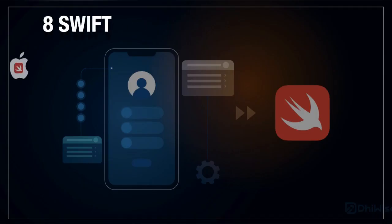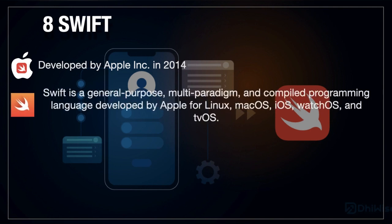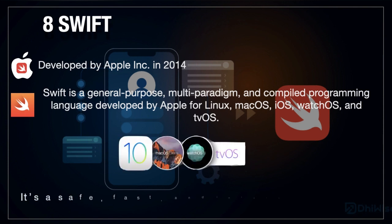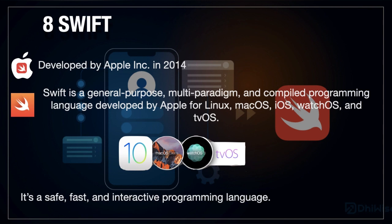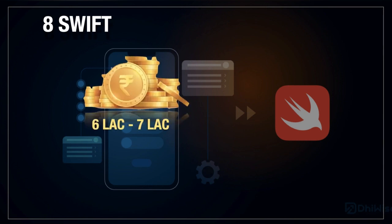In 8th position we have Swift, also developed by Apple in 2014. Swift is a general-purpose, multi-paradigm, compiled programming language developed by Apple. It is only useful for Linux, macOS, iOS, and watchOS — it is not platform independent and is restricted only for the Apple platform. Swift is an interactive programming language. If you have Swift knowledge, you can gain 6 to 7 lakh per annum as your salary.